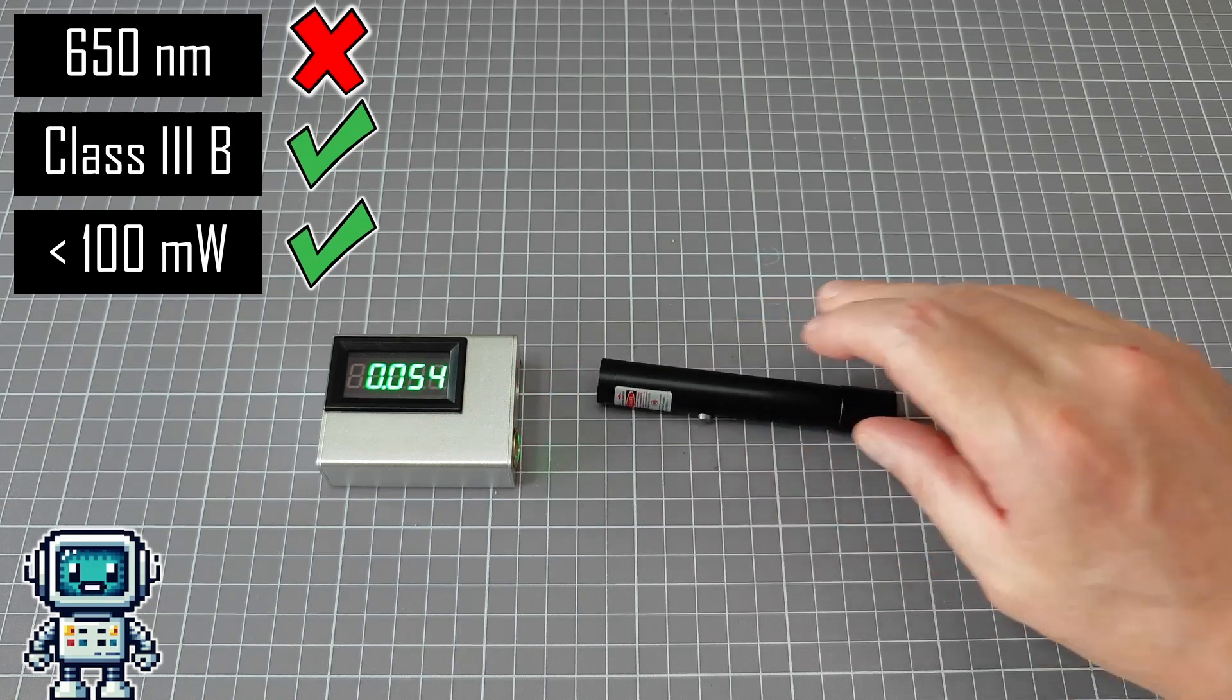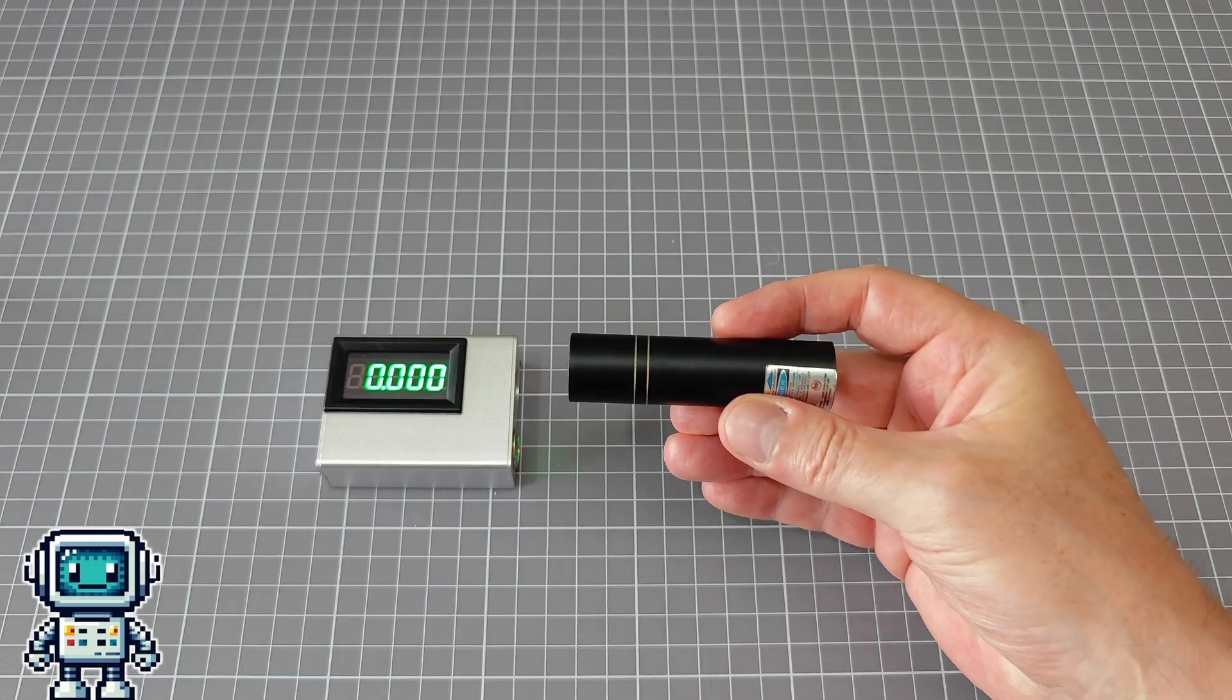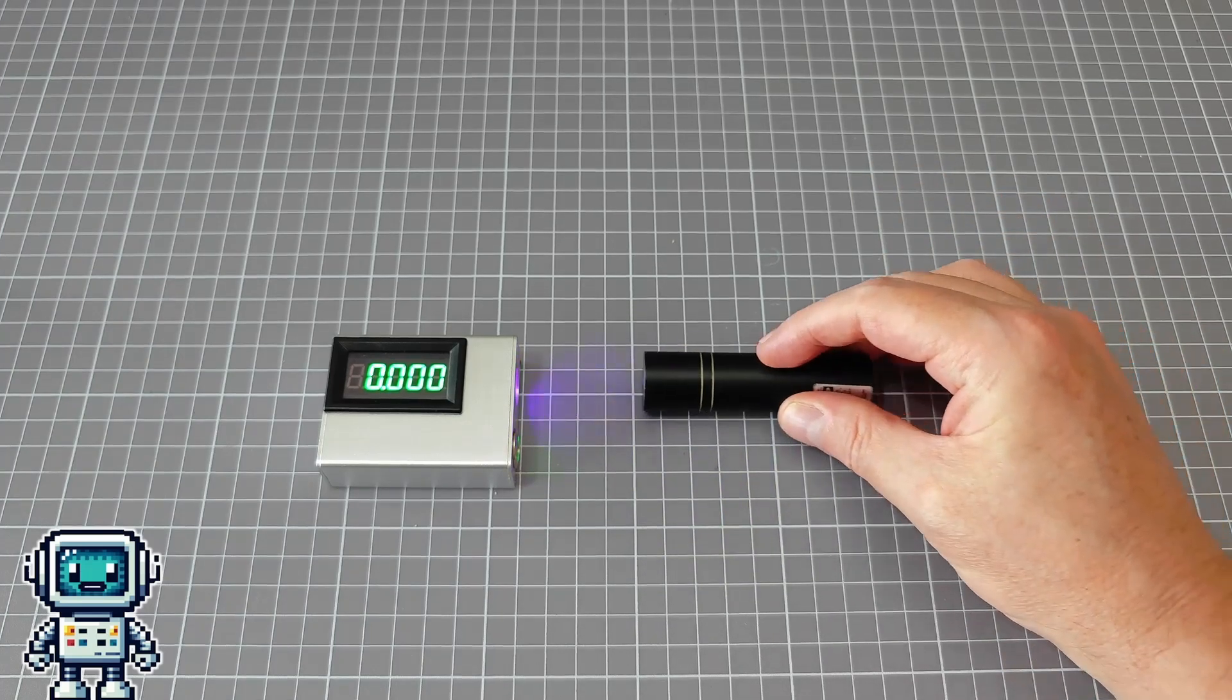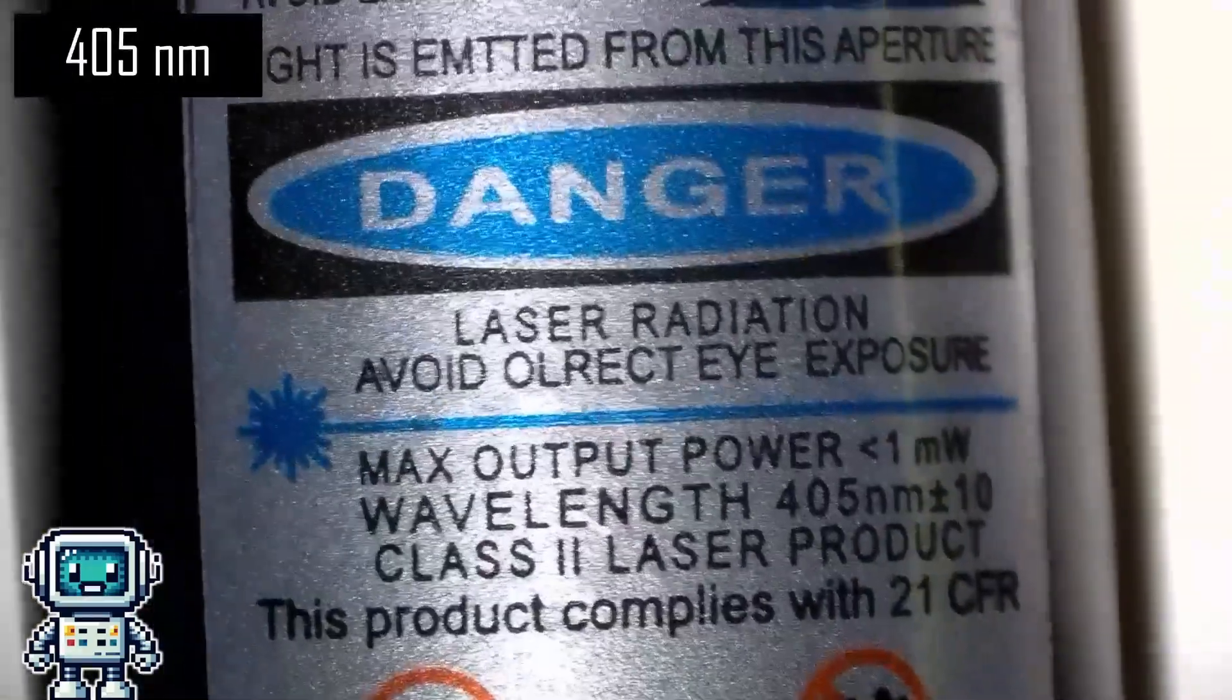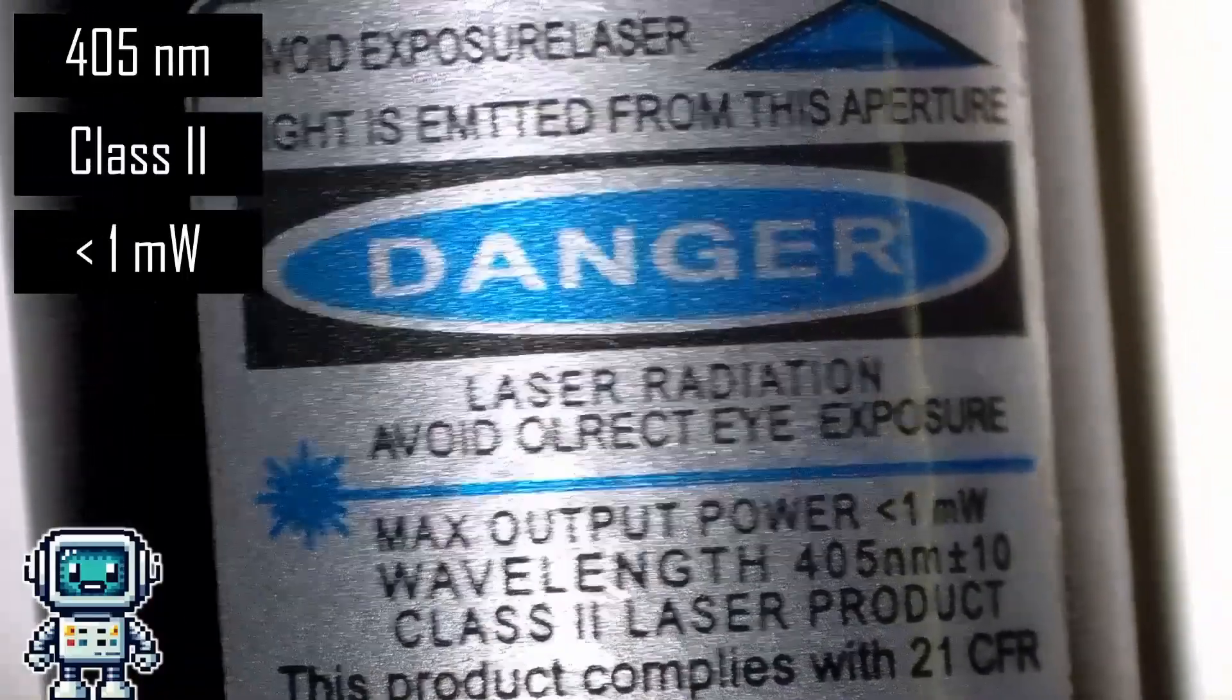So far so good. Next up, we have a violet laser with a stated wavelength of 405 nanometers, a rated power of less than 1 milliwatt, and which claims to be a Class II laser.